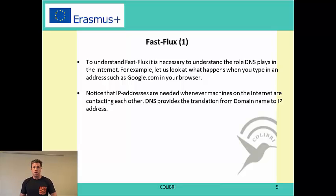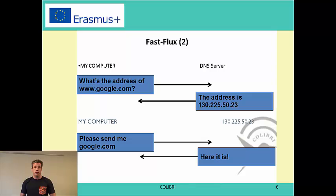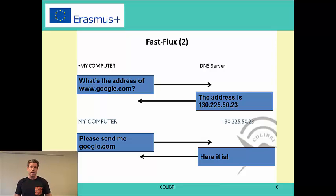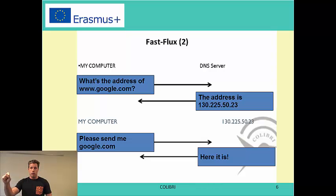FastFlux is also important to understand, but first you need to know how DNS works. DNS provides the translation from domain names such as www.google.com to IP addresses such as 196.68.something.something. To show this in a very simple figure: my computer wants to look up www.google.com, so when I type it into my browser, underneath I am sending a request to my DNS server asking for the IP address of google.com, and I get an IP address back. Then I send a request to that IP address and receive the page.